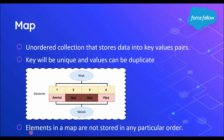Like a set, map is also an unordered collection, which means data can be stored at any position in memory, so we can't use an index to individually access values. If you want to store only a single set of values where values can be duplicate, use a list. If values should be unique, use a set. If you want to store a combination or pair of two values, then use a map in Apex.